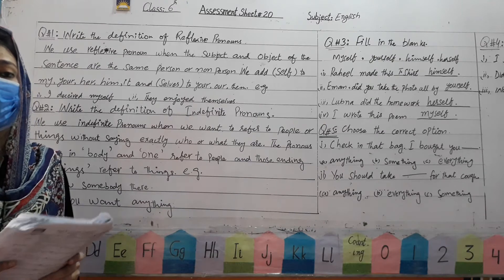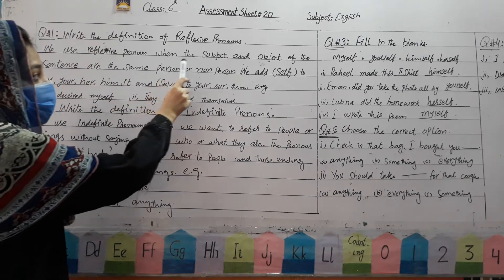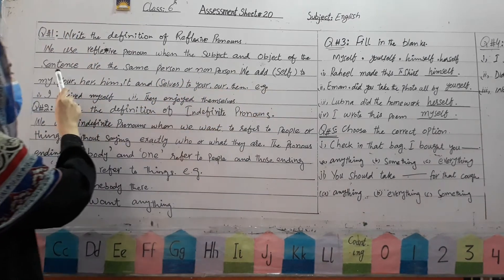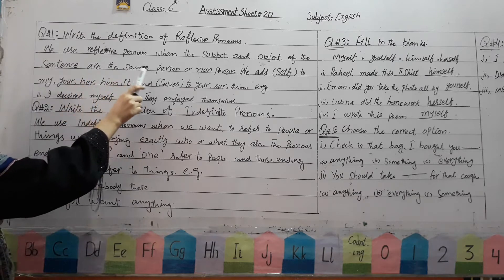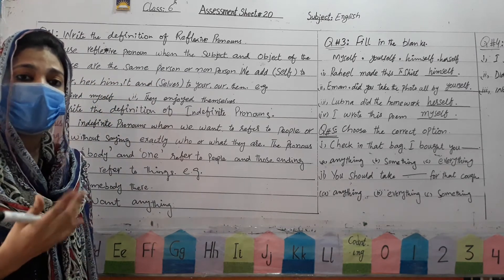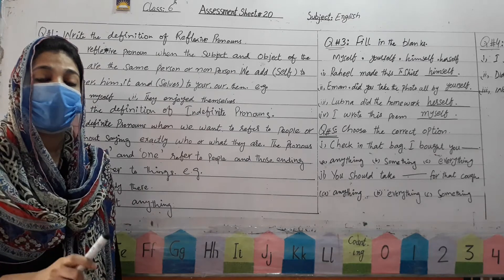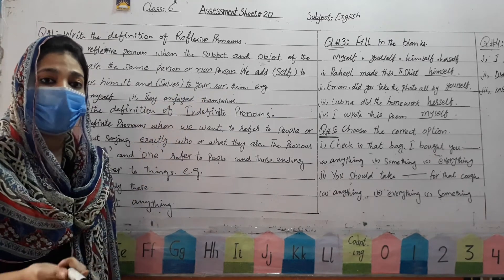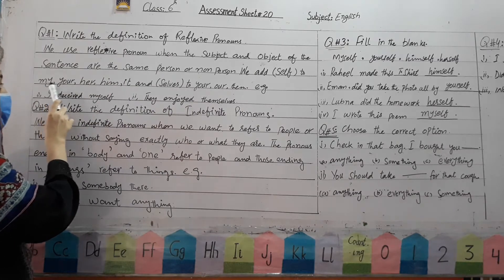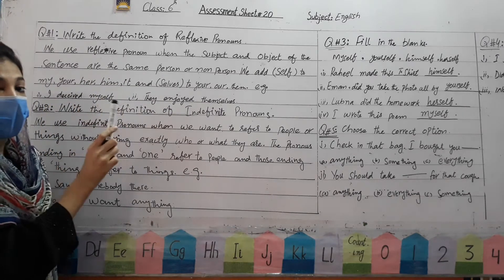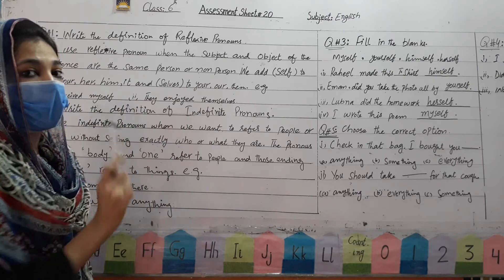Write the definition of reflexive pronoun. We use reflexive pronoun when the subject and object of the sentence are the same person or non-person. In reflexive pronouns, the subject and object are the same. If we add 'self' to my, your, her, him, or it, those are reflexive pronouns.